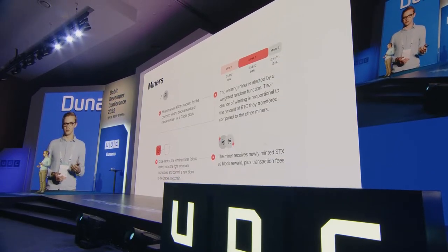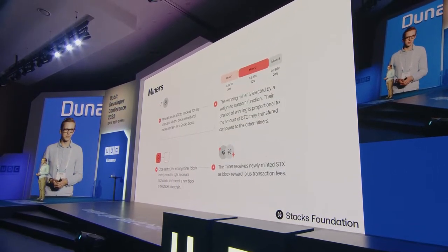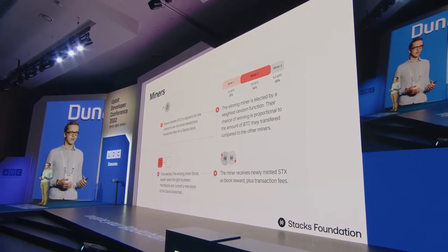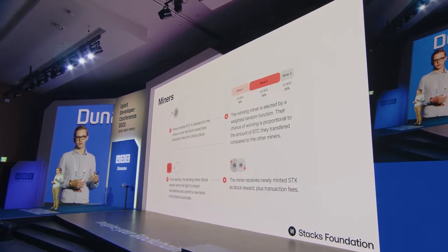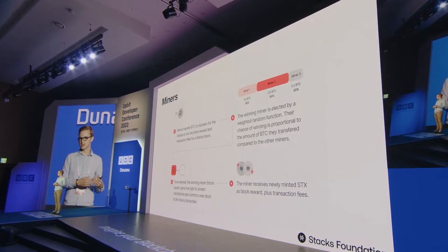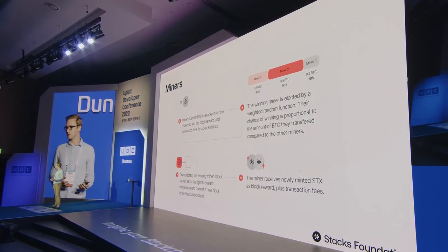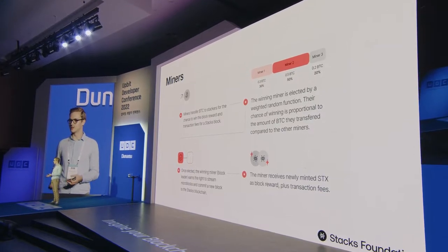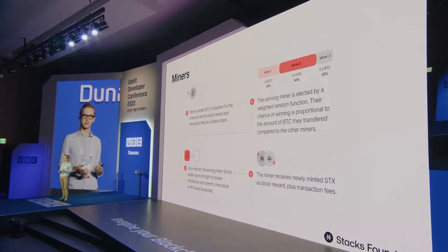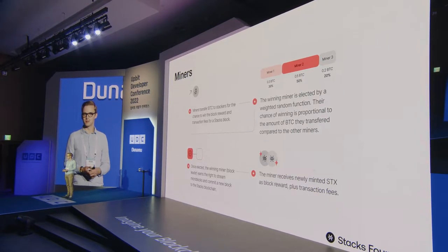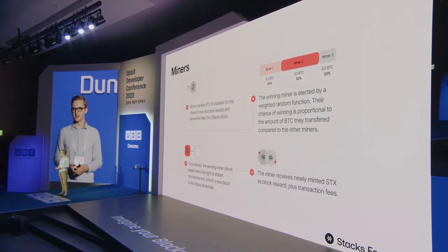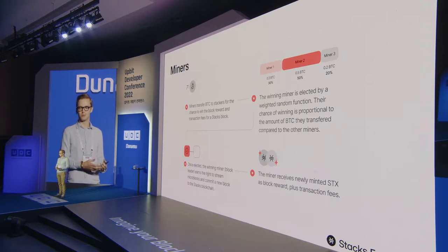Once the leader is elected, that miner earns the right to produce the next block. They can also work on so-called micro blocks produced in between anchor blocks. Since Stacks inherits Bitcoin's security properties, it also inherits Bitcoin's 10-minute block time as the anchor block time. A micro block mechanism allows faster confirmations between these blocks.